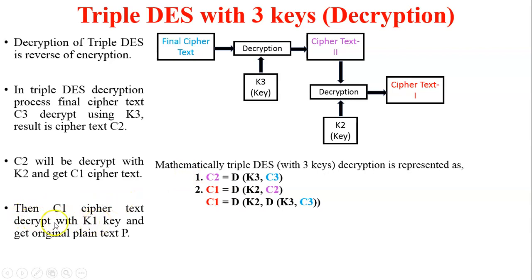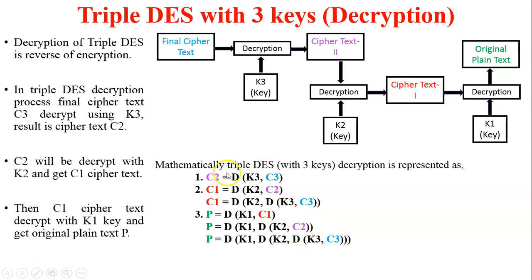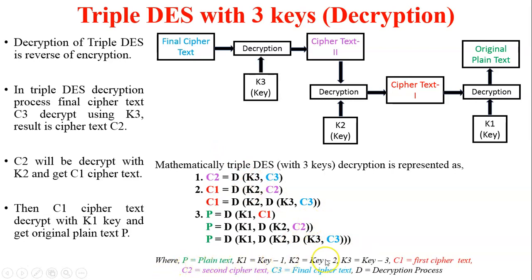Then C1 is decrypted with K1 to get the original plain text P at the receiver side. The third decryption process has inputs C1 and K1, generating plain text P. The equation is: P = D(K1, C1). Substituting C1 and then C2, the simplified equation is: P = D(K1, D(K2, D(K3, C3))). Here D denotes the decryption process. This completes Triple DES with three keys decryption.